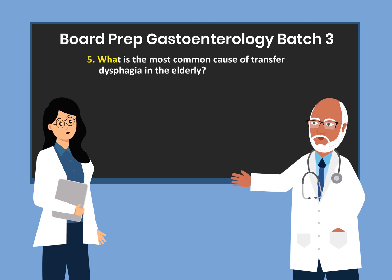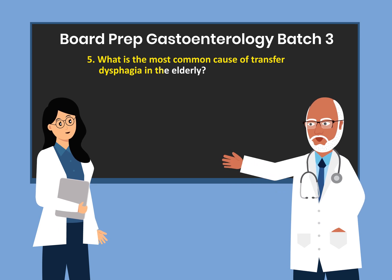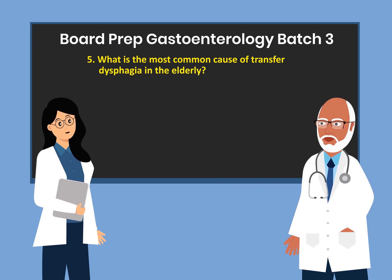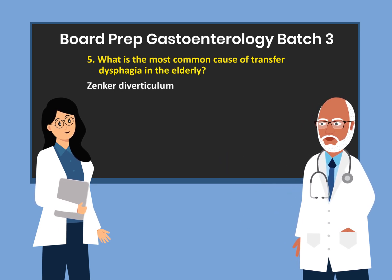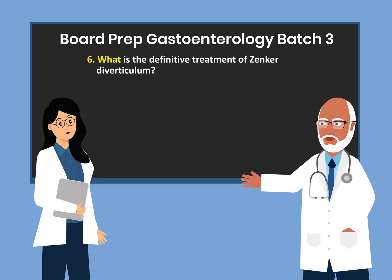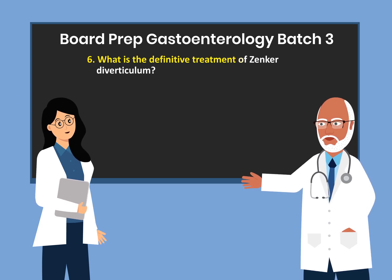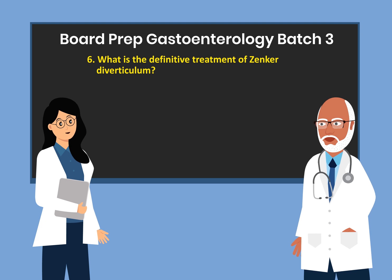Question 5. What is the most common cause of transfer dysphagia in the elderly? Zenker's diverticulum. Question 6. What is the definitive treatment of Zenker's diverticulum? Surgery.